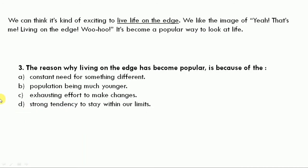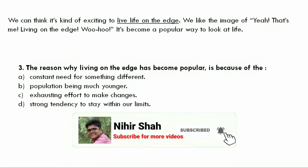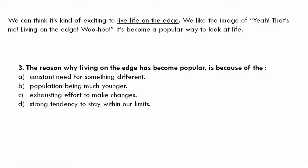Question 3: The reason why living on the edge has become popular is because of A. Constant need for something different, B. Population being much younger, C. Exhausting effort to make changes, or D. Strong tendency to stay within our limits. If you read the text, you will understand that the reason is that we need something new all the time. Here the answer is not given directly, but the meaning is implied. So the correct answer is A: constant need for something different.